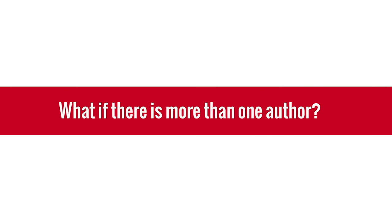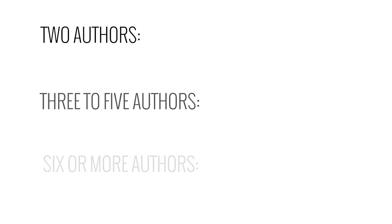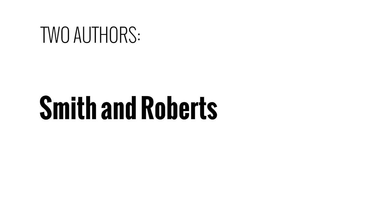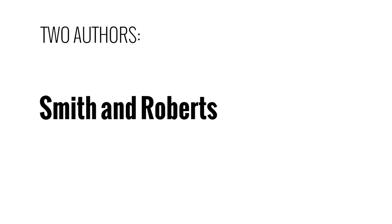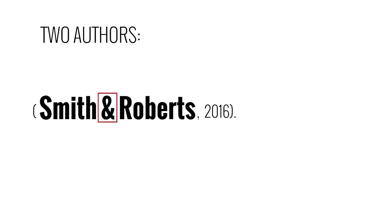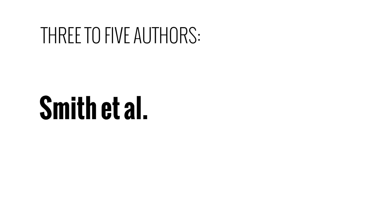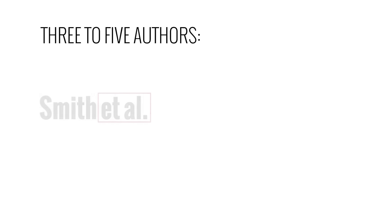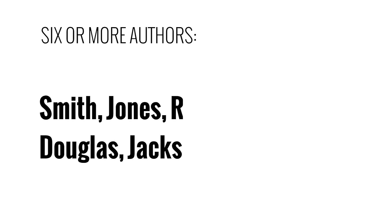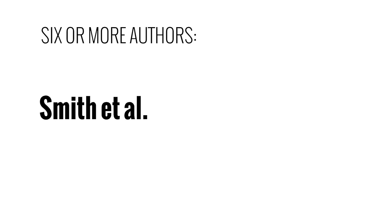What if there is more than one author? How you cite multiple authors depends on how many there are. If there are two authors, you list both with the word 'and' between them. If you cite them in the sentence, 'and' is spelled out; if you cite them in the parenthetical, you use an ampersand. If there are three to five authors, you need to name all of them the first time you reference the source; for every reference after that, you can just use the first author followed by 'et al.', which is Latin for 'and others.' If there are six or more authors, you only use the first author's name followed by 'et al.' every time you cite the source.